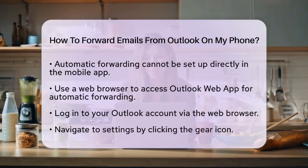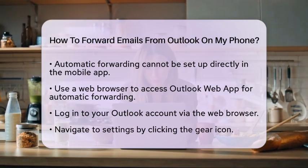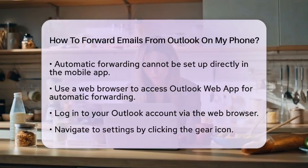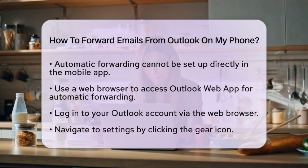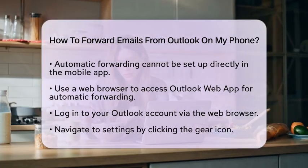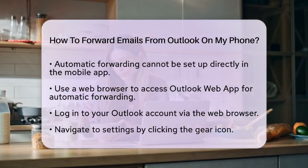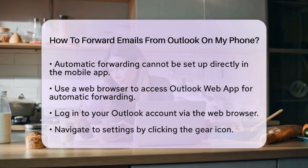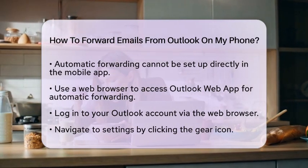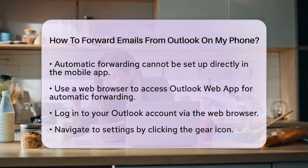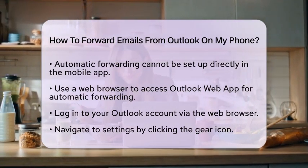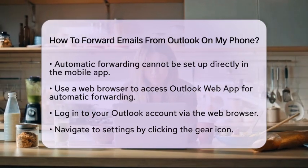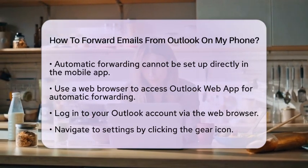Log into your account. Once logged in, look for the settings icon, which looks like a gear. Click on that icon, then navigate to mail and find the forwarding section. In this section, you will see an option to enable forwarding. Enter the email address where you want all your incoming emails to be sent. Don't forget to save your changes before you exit.